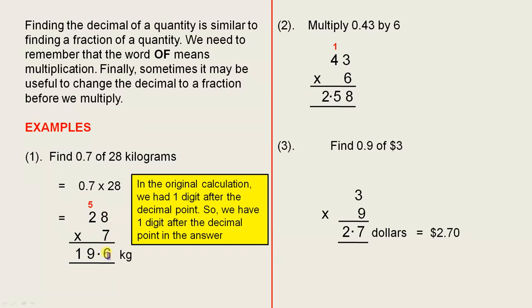7 eights are 56, put down the 6 and here we have traded the 5. 7 twos are 14 plus 5 is 19. So we have 196. Now go back to the original calculation here, what we're asked to do, and you'll see there's one digit after the decimal point.